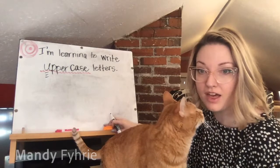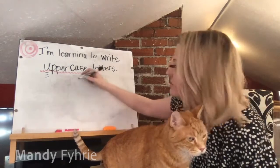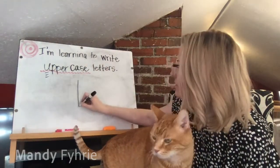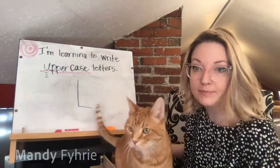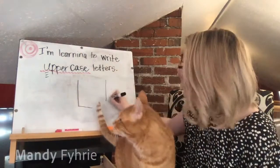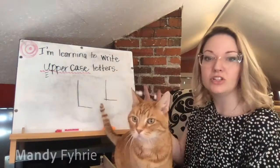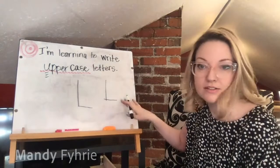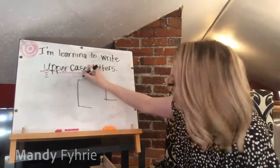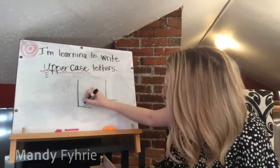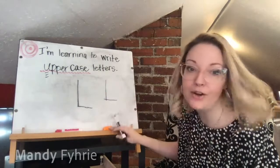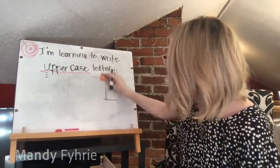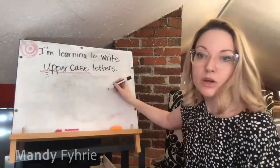Capital L: you do not pick up your marker for this one. Just move it across — big line down, little line over. Picking up your marker interrupts the flow when writing, so we want it fluid: big line down, little line over.